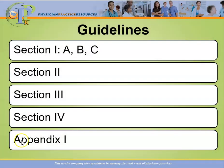Let's recap on our guidelines. Section one is divided into A, B, and C. A covers the conventions for ICD-10-CM. B covers general coding guidelines. And C covers the chapter-specific guidelines. There are 21 chapters in the ICD-10-CM code set, but three of those chapters actually don't have guidelines.